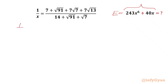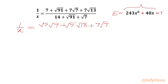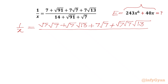Now we will begin with given 1 over x. We can write 7 as root 7 times root 7. We can write root 91 as root 7 times root 13. 7 root 7 we will write as it is, and then we have 7 root 13 which we can write as root 7 times root 7, this is 7 times root 13. In the denominator we will write 14 as 2 times 7, so 2 times root 7 times root 7. Root 91 we will write as root 7 times root 13, and root 7 we will write as it is.